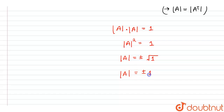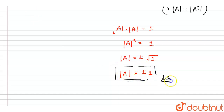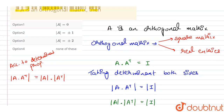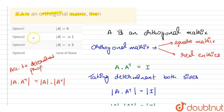So the determinant of A will be equal to plus or minus the square root of 1, which is plus or minus 1. This means for any orthogonal matrix, the determinant of A is always equal to either +1 or -1. Therefore, option two — determinant of A equals plus or minus 1 — is the correct answer.